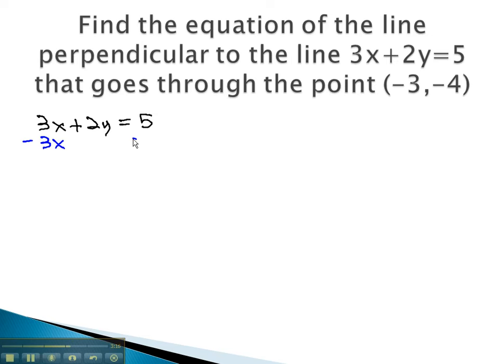Start finding the slope by solving for y. Subtract 3x from both sides, and 2y equals negative 3x plus 5. Get the y alone by dividing each term by 2, and y equals negative 3 halves x plus 5 halves.